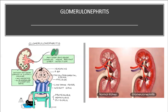Assessment findings in glomerulonephritis: headaches, elevated blood pressure, facial and periorbital edema (swelling around the eyes and face), malaise, low-grade fever, obvious weight gain, protein in the urine, blood in the urine, and diminished urinary output.